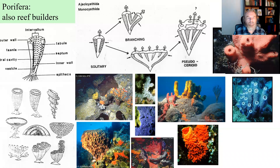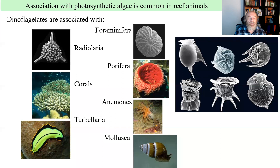Corals are not the only structure builders on the reefs. Second in importance are Porifera — a very old and morphologically diverse group, also filtrators, contributing to the physical structure of coral reefs. The photosynthetic algae mutualism is not only with corals; these dinoflagellates are associated with a large range of taxa in the seas, including radiolaria, foraminifera, sponges, anemones, and Turbellaria mollusca.